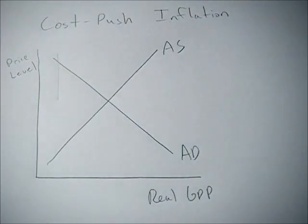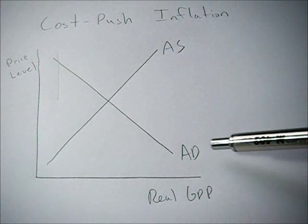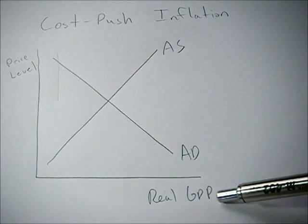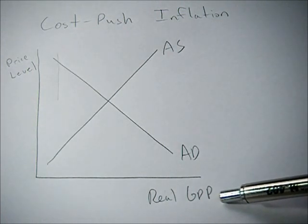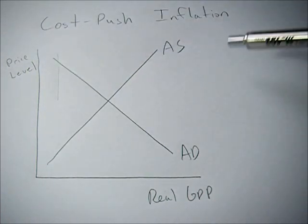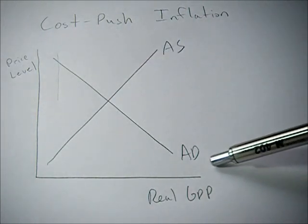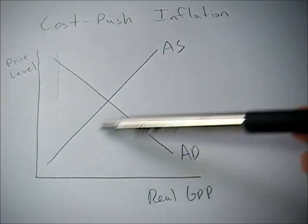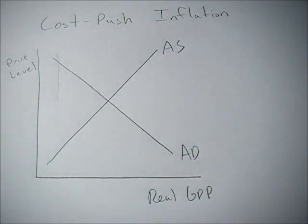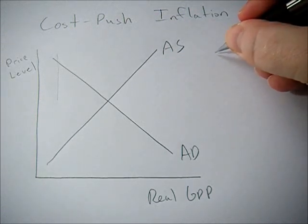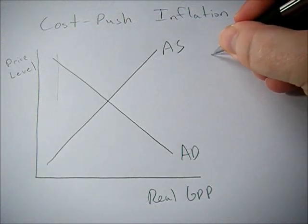This video briefly goes over the concept of cost push inflation. To understand what causes it, we can look at our aggregate supply and aggregate demand model — we have real GDP on the x-axis, price level on the y-axis, a downward sloping aggregate demand curve, and an upward sloping aggregate supply curve. So what is cost push inflation?